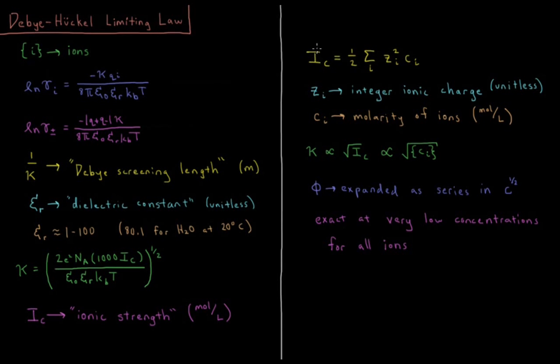The ionic strength, Ic, is equal to one-half the sum over all of the ions in solution of the integer ionic charge of that ion squared times its molarity. For example, for sodium that's a plus one, magnesium and calcium are plus two, and it's just the integer of whatever the ionic charge is. The concentration is the molarity of that ion in moles per liter.